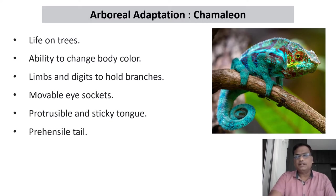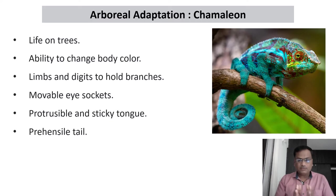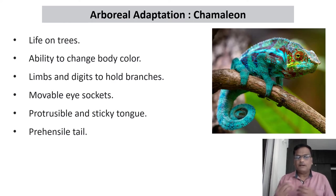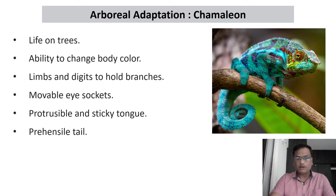The chameleon also has a protrusible and sticky tongue. On the land, animals have the freedom of moving to chase food, but the chameleon is sitting on a branch. To avoid unnecessary movement it has a very long and sticky tongue — whenever it finds an insect, the tongue comes out of the mouth, called protrusible, touches the insect, the insect attaches to the tongue, and it takes the insect into its mouth.